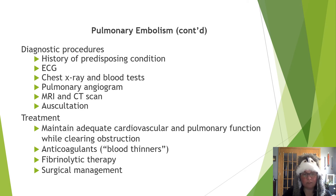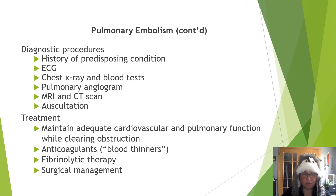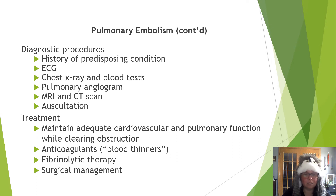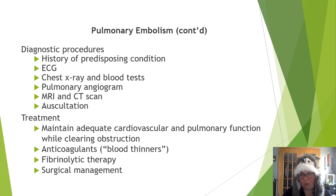PE is treated by maintaining adequate cardiovascular and pulmonary function while clearing any obstructions. Blood thinners — more accurately called anticoagulants — deactivate coagulation triggers that cause clots. In a closed system preventing clots is good, but if the system becomes open from an accident or cut, clotting is important. So the proper term is anticoagulant, not blood thinner. Fibrinolytic therapy and surgery could also treat a pulmonary embolism.